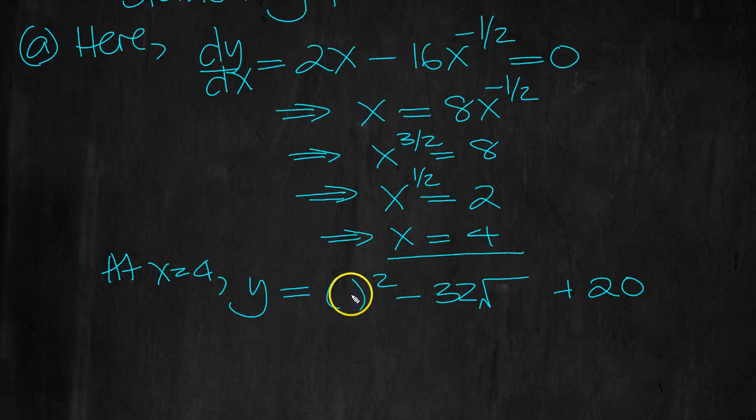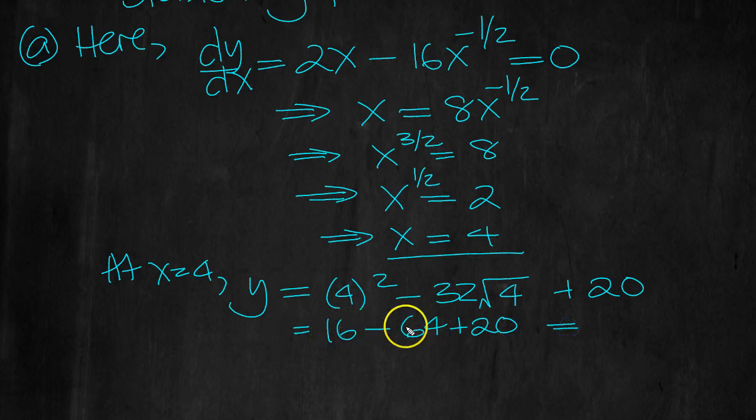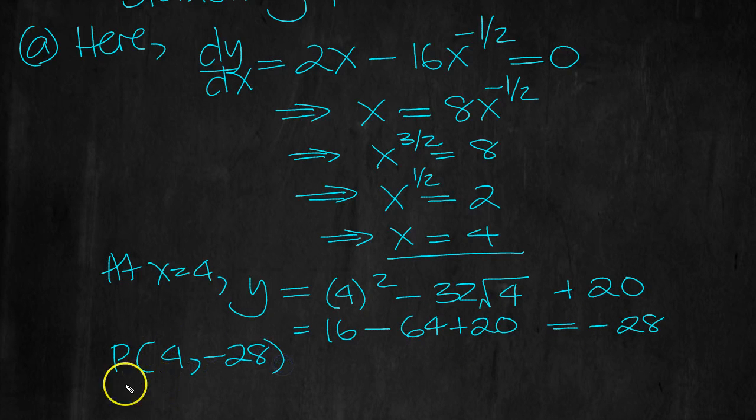OK, so 4 is the x value, so we get 16, minus 32 times 2 is 64, plus 20. Minus 48, plus 20 is minus 28. So P has coordinates then, 4 and minus 28. That's part a.